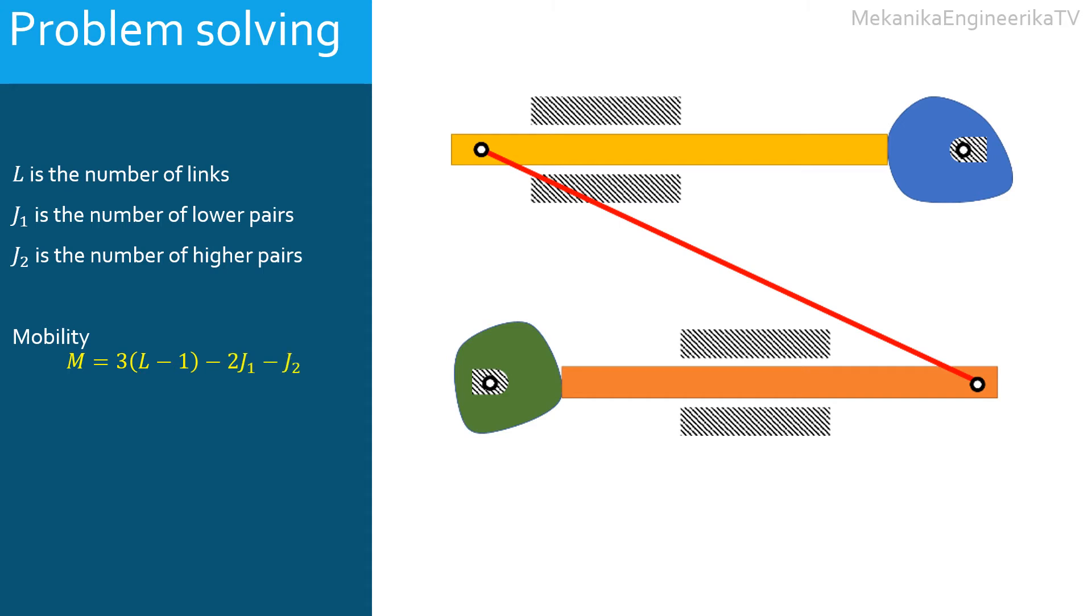This mechanism is built from the ground, 3 bars, and 2 cams. Thus, L is equal to 6.